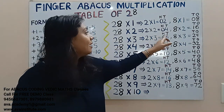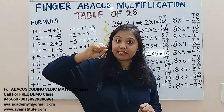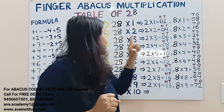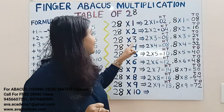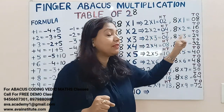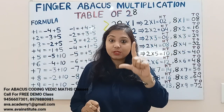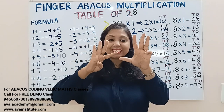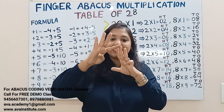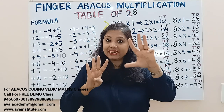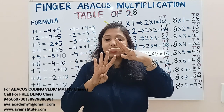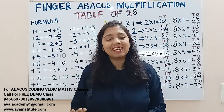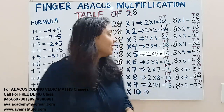Next, 28 threes: 2 threes are 6 — in hundreds: 0, in tens: 6. Now 8 threes are 24 — in tens: 20, in ones: 4. So what is the answer? 50, 60, 70, 80, 81, 82, 83, 84. 84 is the answer.